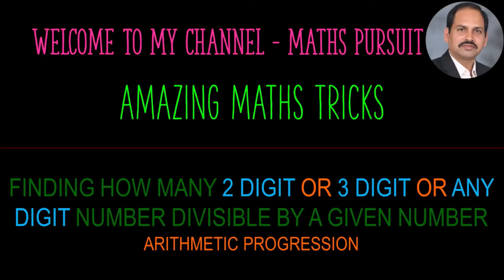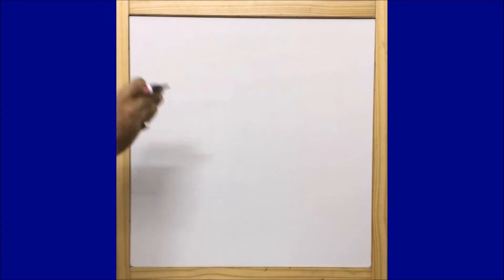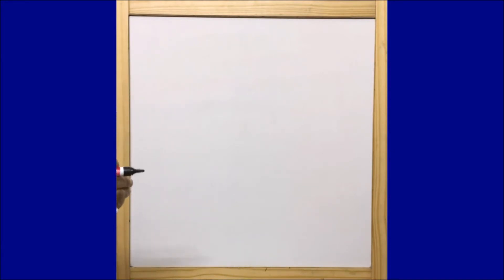Hello friends, welcome to my channel Maths Pursuit. Today, under amazing math tricks, we will learn how to find out the number of digits between a given number range divisible by a particular number within seconds. Today I'm going to show you how very quickly and easily to find out how many numbers are there within a given range which is divisible by two, three, or seven.